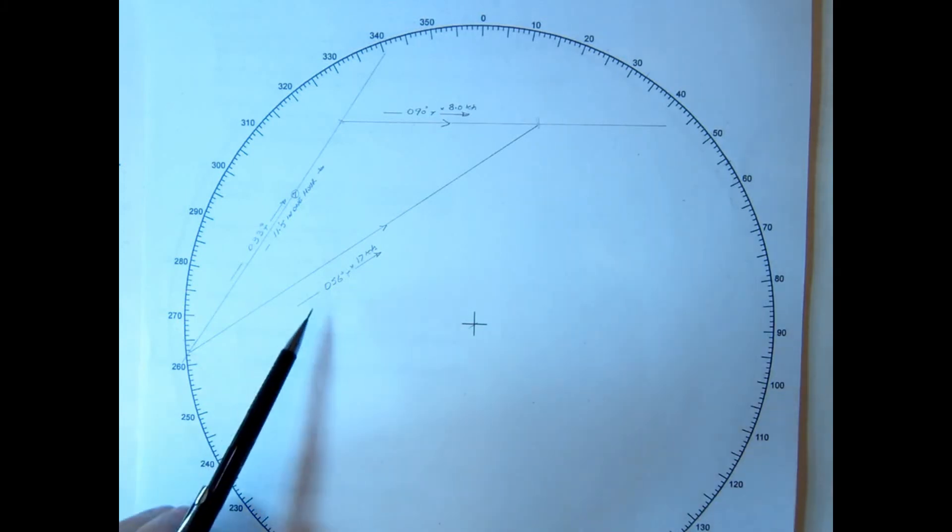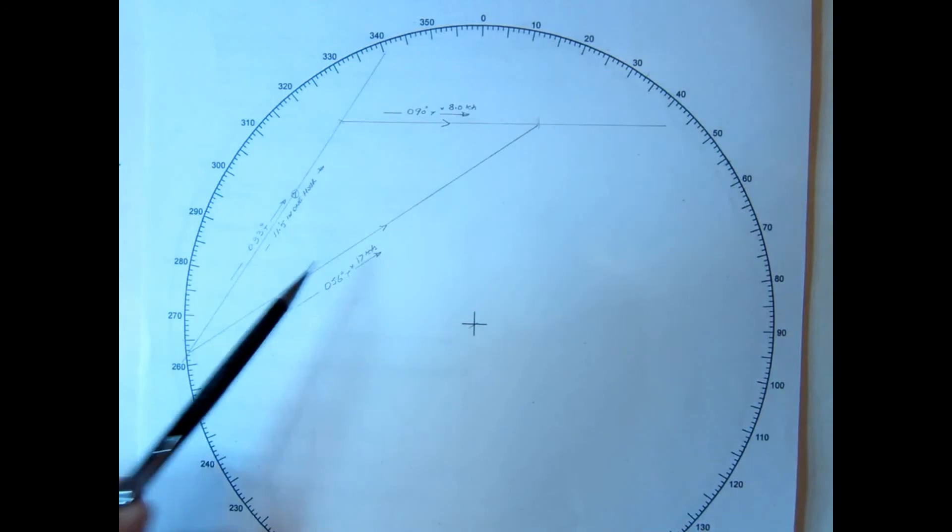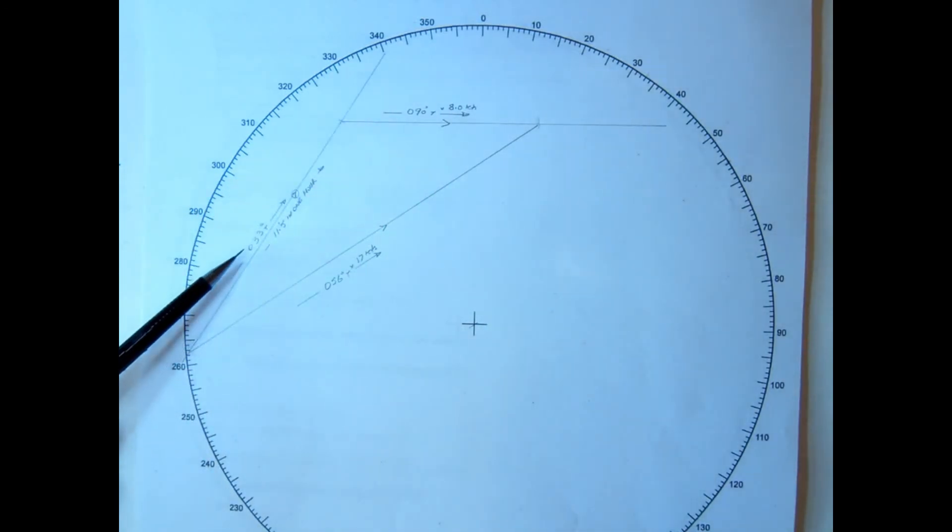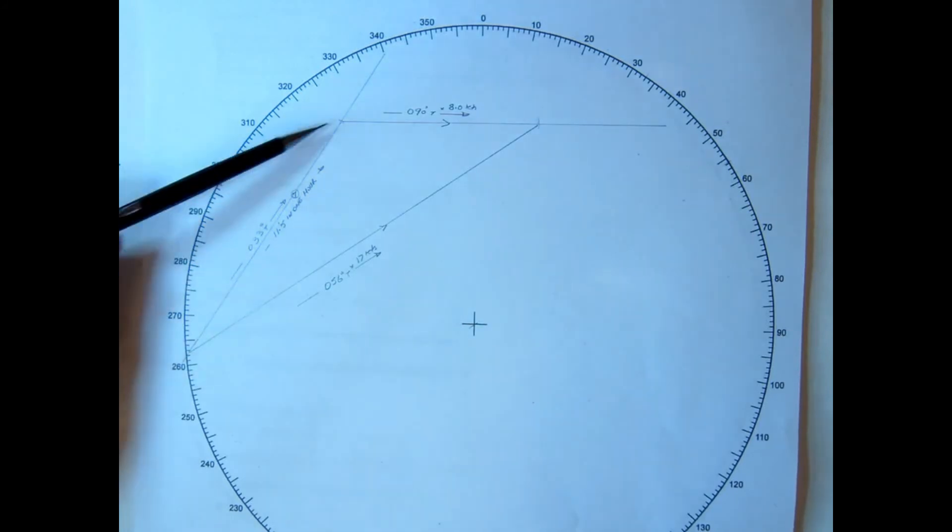So from this diagram, this vector diagram, I've got my course, and importantly, that's an hour, that's an hour, so this line here must be for an hour. So between our two vessels, we'll cover a distance of 11.5 miles in one hour. So from there to there, we can now measure is 11.5 miles.